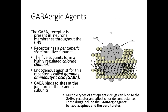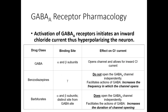Going back to GABAergic drugs — here is a review of the GABA-A receptor. It has a pentamer structure and is a chloride channel. The endogenous compound is GABA, gamma-aminobutyric acid. As a recap: benzodiazepines increase the frequency of channel openings; barbiturates increase the duration of channel openings. This GABA receptor pharmacology with benzodiazepines and barbiturates is a little bit of a recap from earlier material.